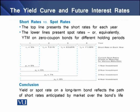Looking at the diagram distinguishing short rates from spot rates: the top line shows short rates for each year — R1 = 5%, R2 = 7%, R3 = 9.025%, R4 = 11.06%. The lower lines represent spot rates (equivalently, YTMs on zero coupon bonds for different holding periods): Y1 = 5%, Y2 = 6%, Y3 = 7%, Y4 = 8%, for holding periods ranging from one to four years. The conclusion is that the yield or spot rate on long-term bonds reflects the path of short-term rates anticipated by the market over the bond's life.